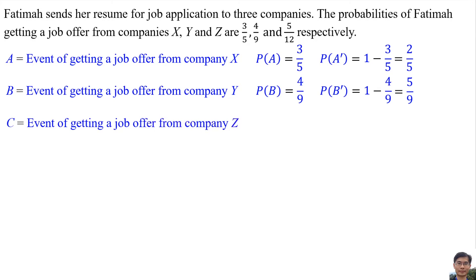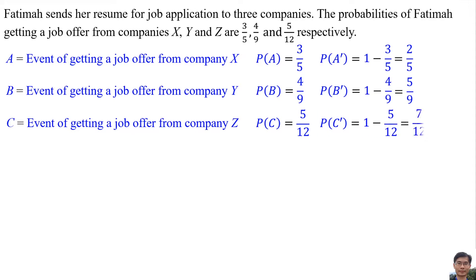Let C be the event of getting a job offer from company Z. So the probability of event C is 5 over 12. The probability of the event of not getting a job offer from company Z is 1 minus 5 over 12, which is equal to 7 over 12.